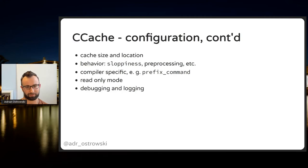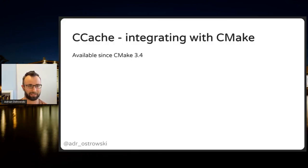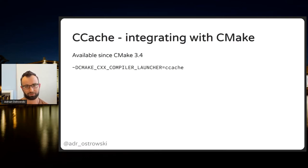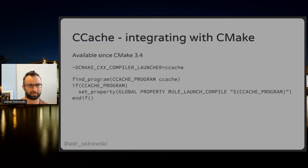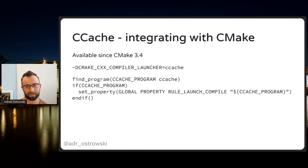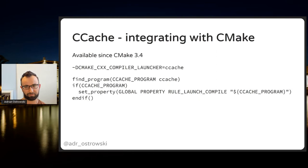To integrate Ccache with CMake 3.4 or later, just pass a variable: set CXX_COMPILER_LAUNCHER or C_COMPILER_LAUNCHER to ccache — that's all you need. Alternatively, you can use a CMake snippet that detects if Ccache is available on the OS and, if so, sets the RULE_LAUNCH_COMPILE property either globally or for specific targets. Note: many people also set RULE_LAUNCH_LINK thinking Ccache caches linking results, but it doesn't — it only caches compilation artifacts.